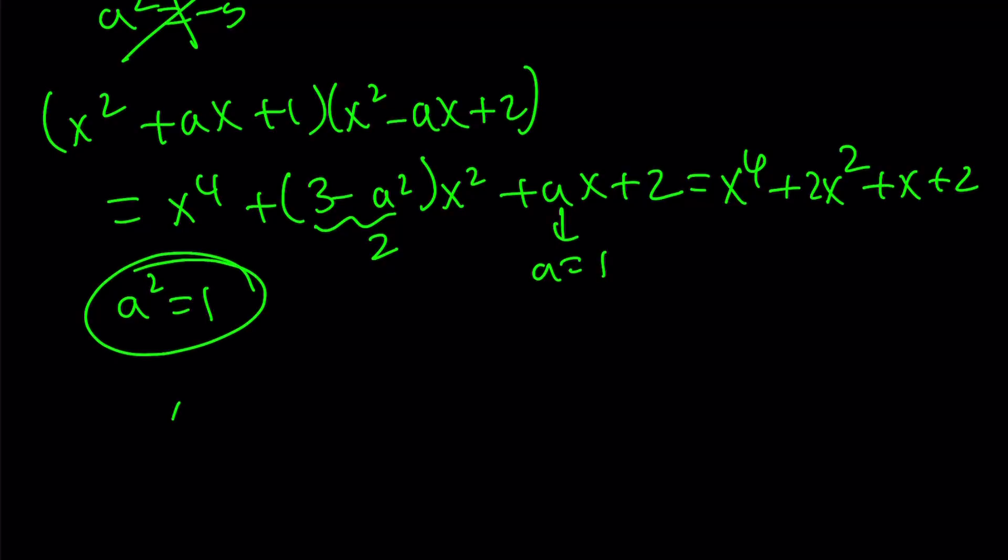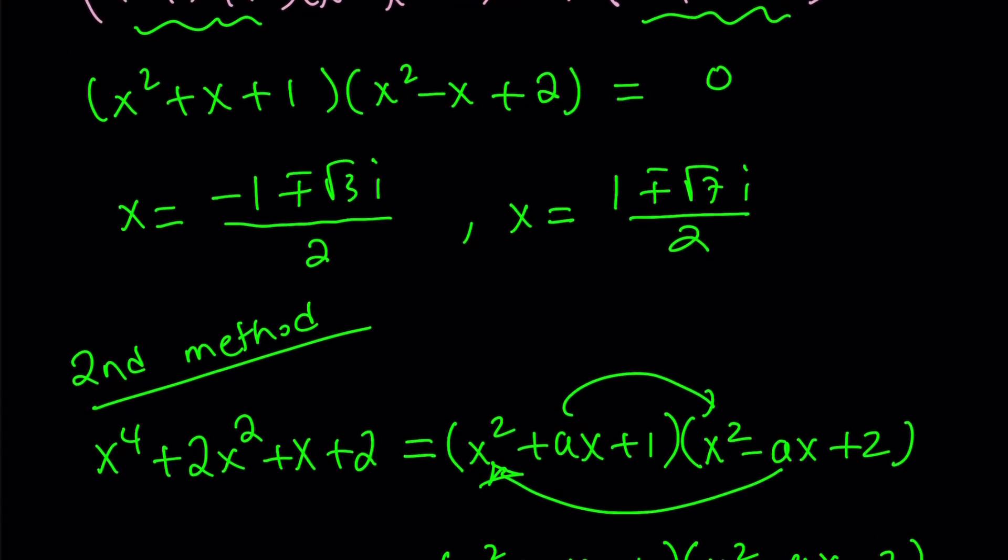And we get x squared plus x plus 1 times x squared minus x plus 2 equals 0. And from here, we get the exact same solutions. And this brings us to the end of this video.